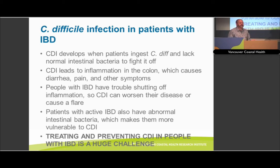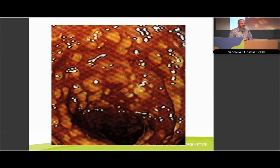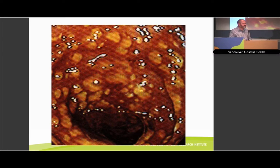Treating and preventing C. diff in patients with IBD is a huge challenge, and some colleagues both here in Vancouver and around the world are focusing specifically on this question. This is the real sign of C. diff — called pseudomembranous colitis. What you see here is the inside of a colon filled with inflamed mucosa and white patches described as spattering cream-colored paint on a red wall. Those patches are called pseudomembranes — they're ulcers and inflammatory tissue. You can imagine how unpleasant and painful that could be.